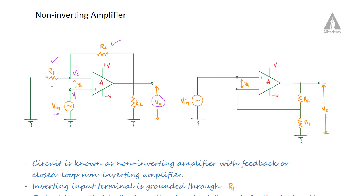In the non-inverting amplifier, the inverting terminal is grounded through R1 resistor and the output voltage is fed back to the inverting terminal through a feedback resistor RF. The feedback is connected to the inverting terminal, and this is the reason the amplifier uses negative feedback. So part of the output voltage is subtracted from the input voltage — that is the negative terminal input.